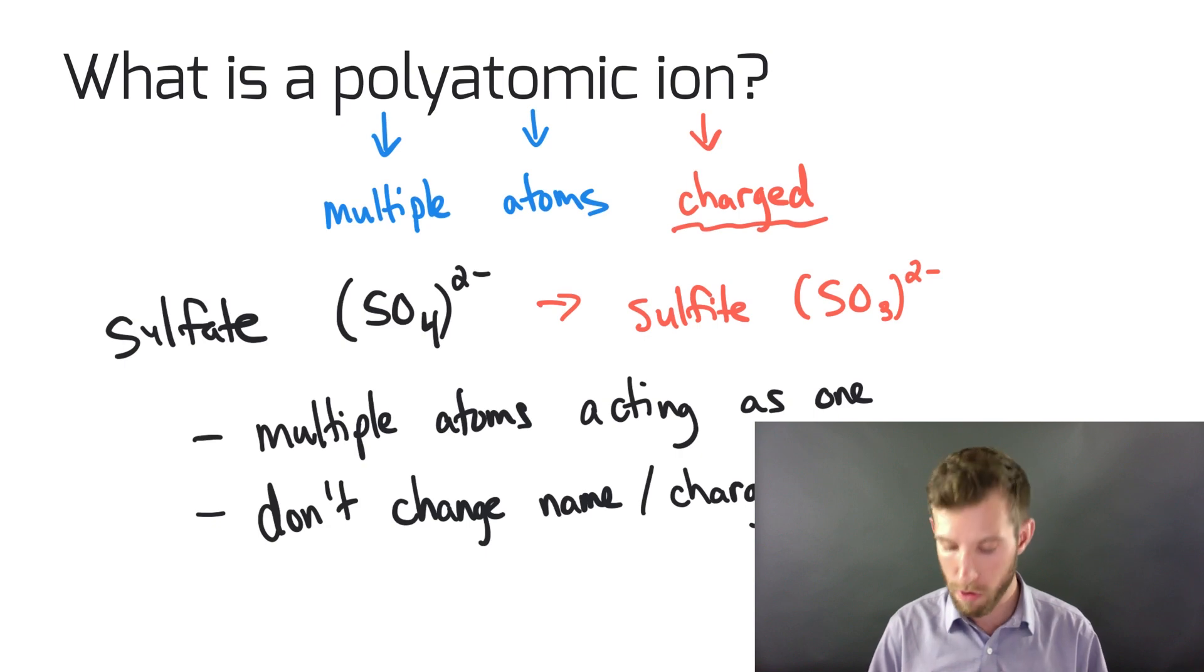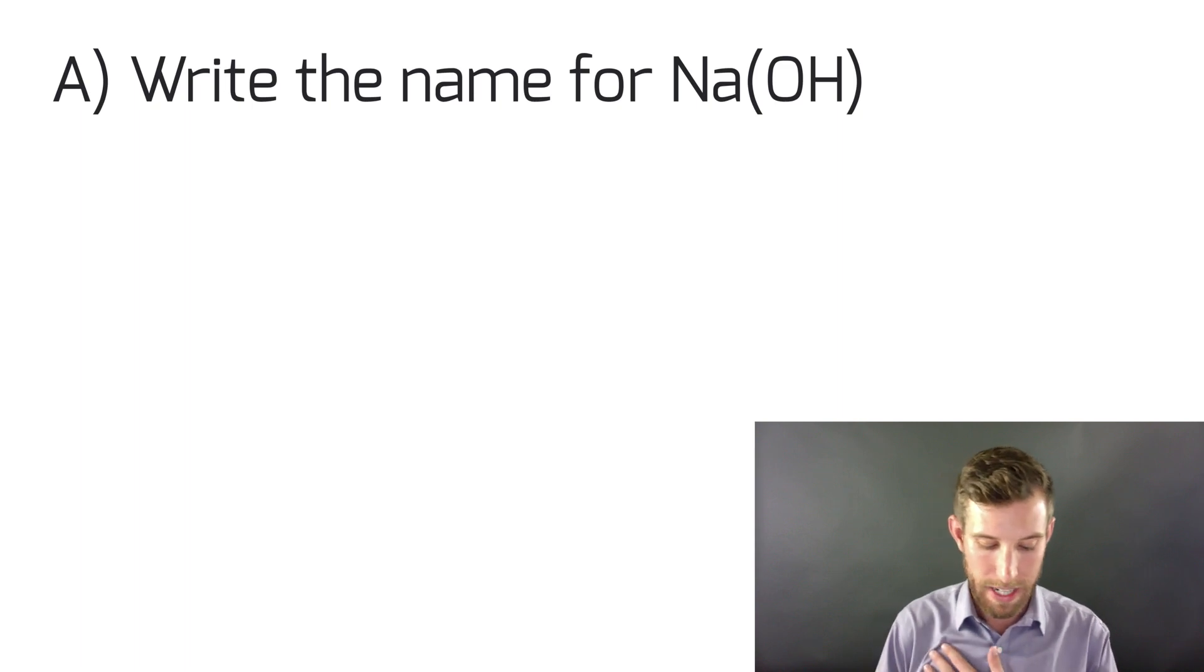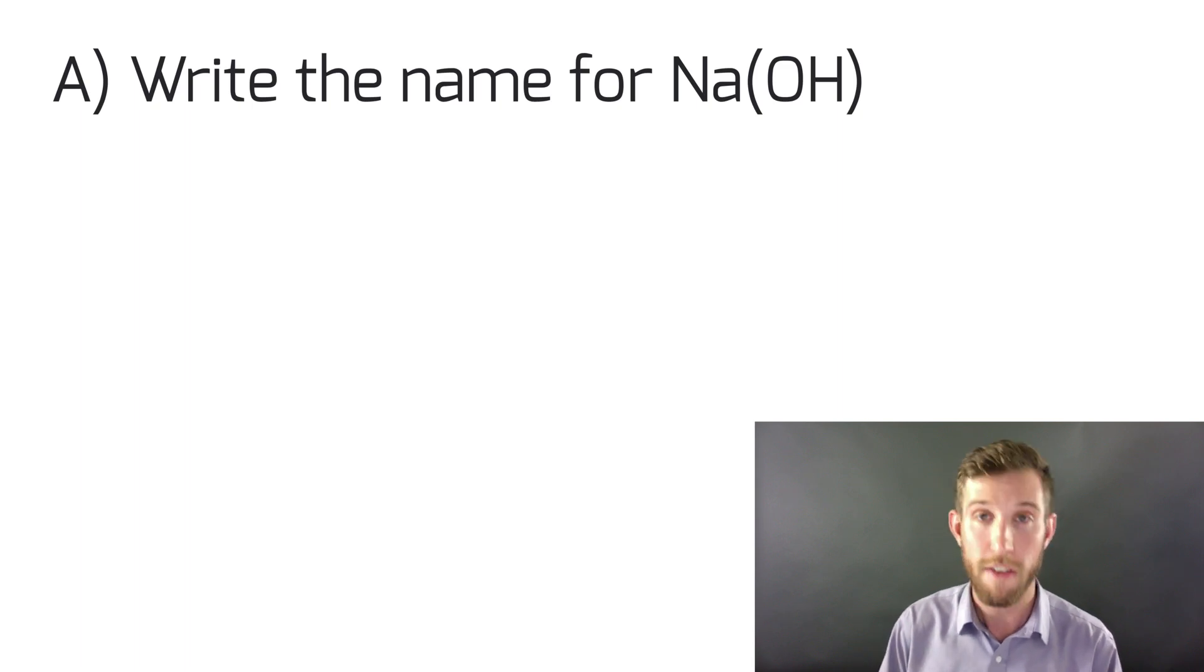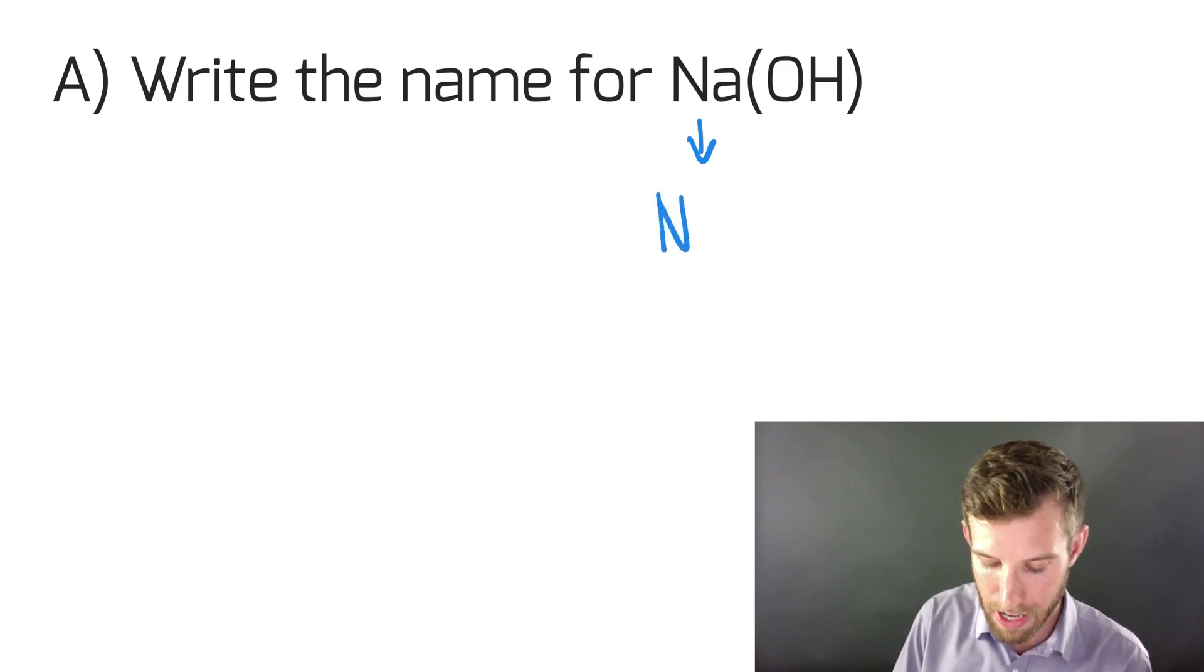Let's jump over into an example. I'm asking you to write the name for NaOH. One thing I should say is I like it when my students write their polyatomic ion in brackets. I find it easier for organization and identification purposes. Let's look at this in more detail. The first thing I like to do is look at what my cation or my metal, the positive charged ion, is. This is Na and it has a one plus charge. I know that from looking at the periodic table.